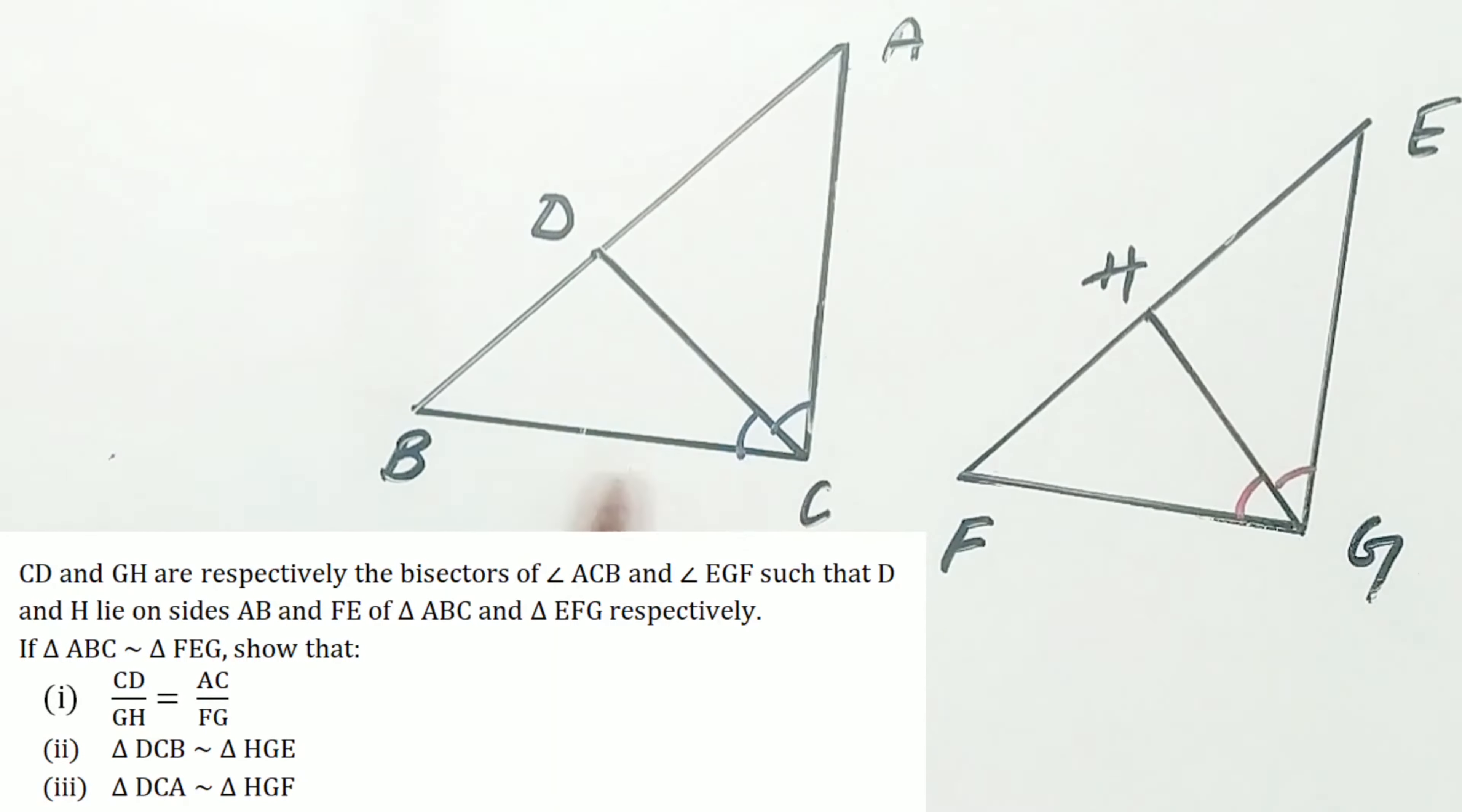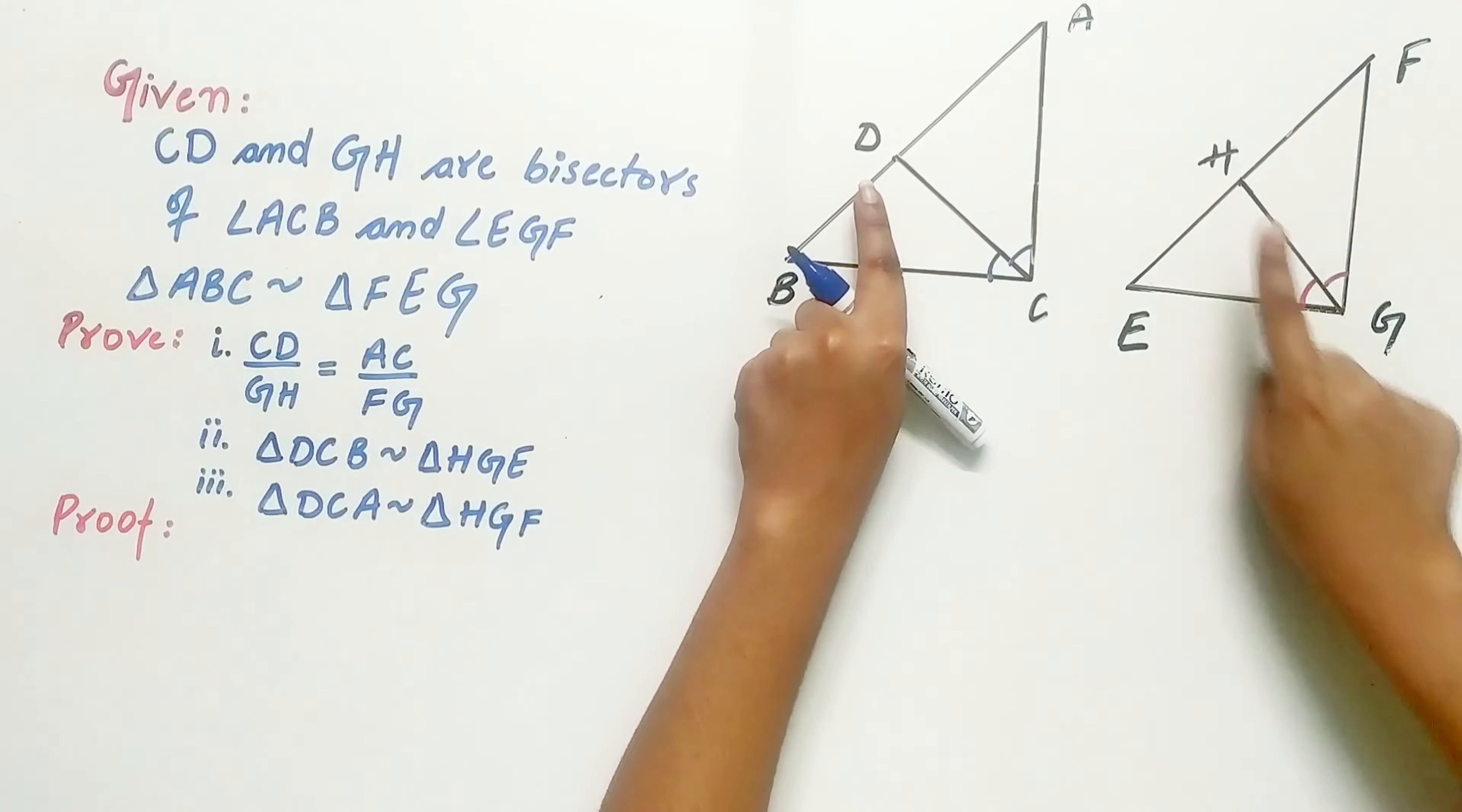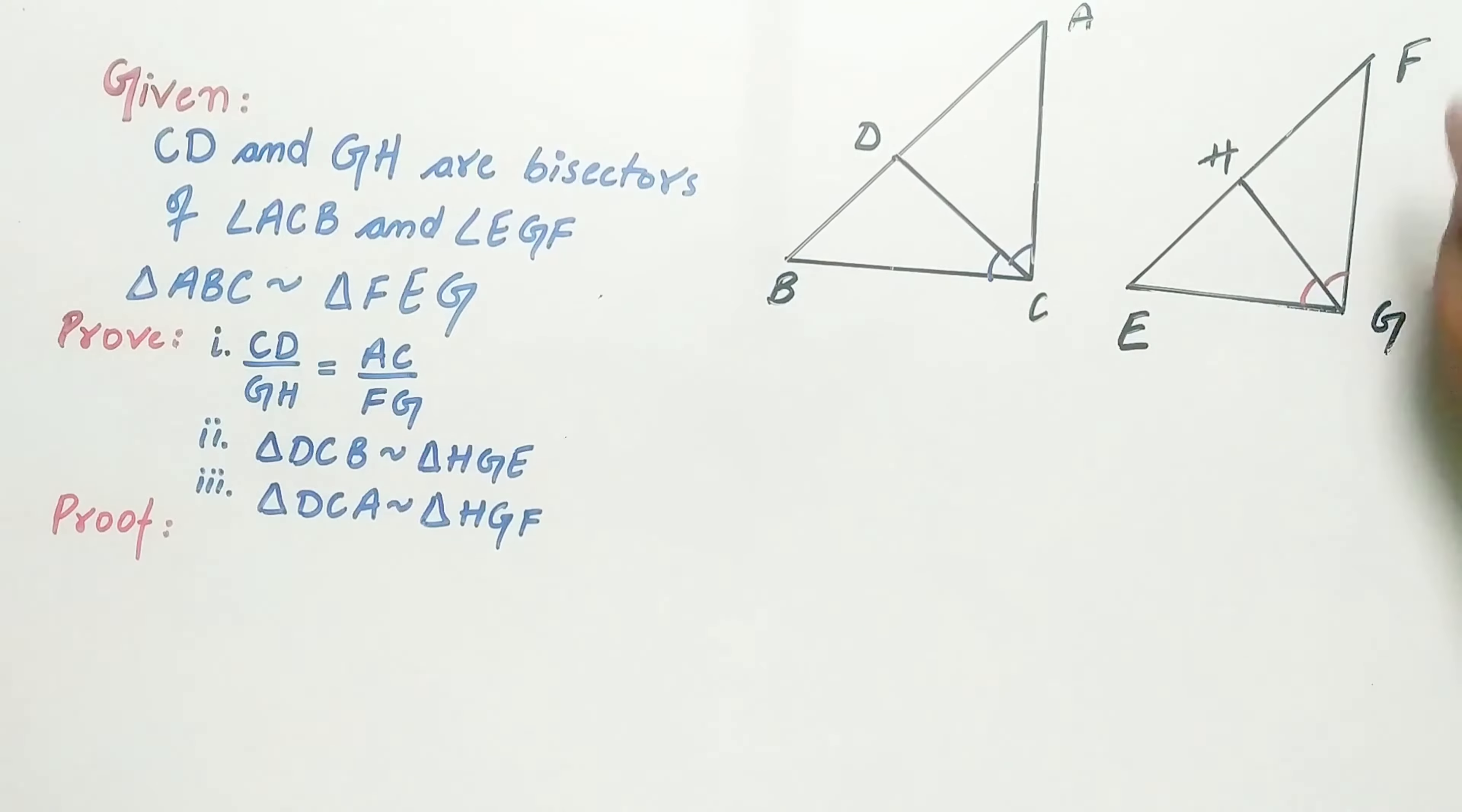If triangle ABC is similar to triangle FEG, show that CD by GH is equal to AC by FG.